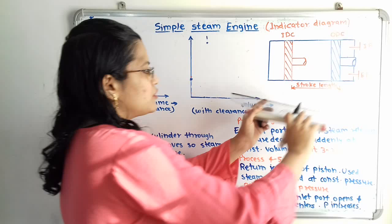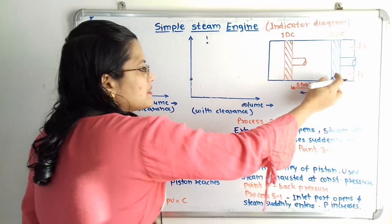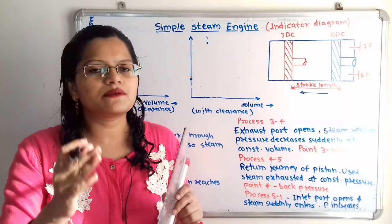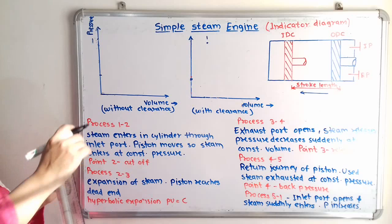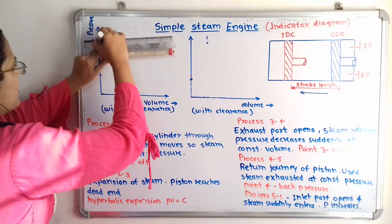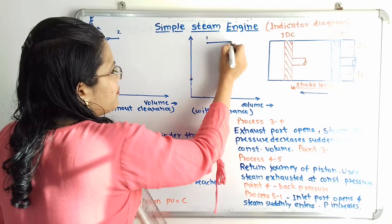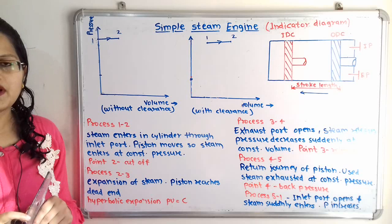As steam enters, pressure remains constant and the piston moves. At point 2, steam supply is cut off, so point 2 is known as the cut-off point. We show process 1 to 2 as a constant pressure horizontal line, and mark point 2 where steam supply is cut off, for both the without-clearance and with-clearance diagrams.